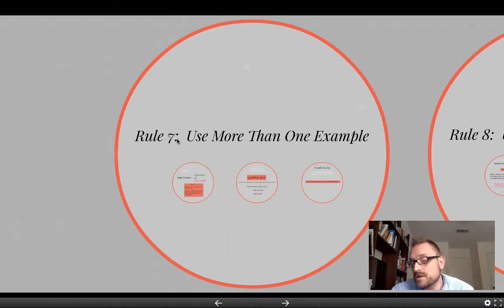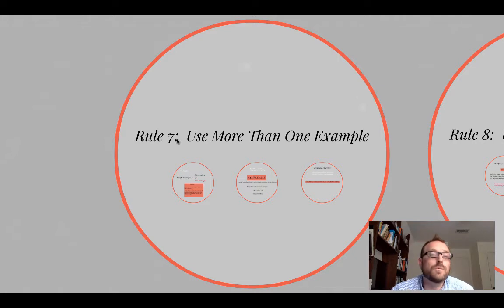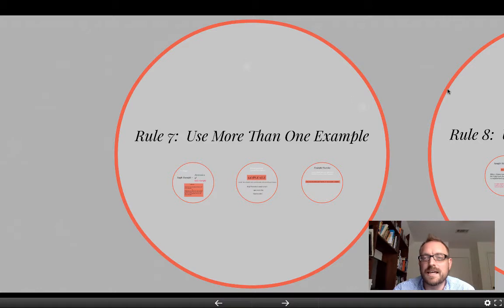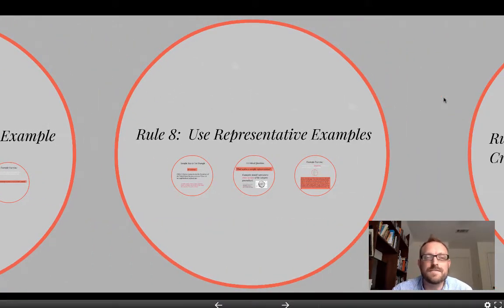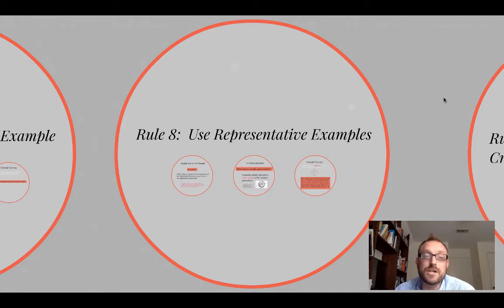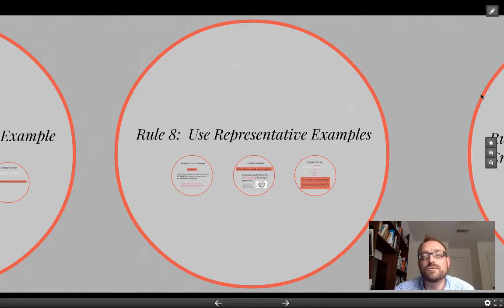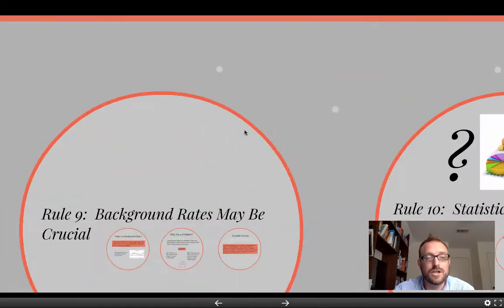For instance, we looked in Rule 7 that there should always be more than one example to support a generalized claim. So if you say that all Christians pray, then you need to give more than one example that that's the case. It's likely that at least most Christians pray, and so there's lots of evidence for that, at least as a generalization. Rule 8 was that when examples are used, those examples should be representative. So you need to look for representative examples to support a generalization.